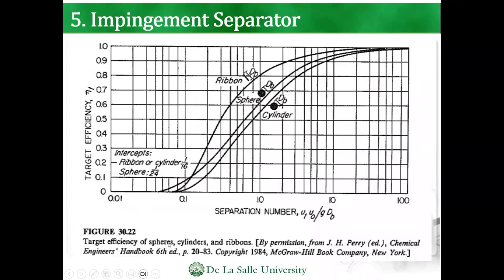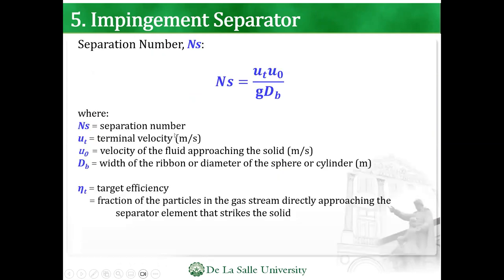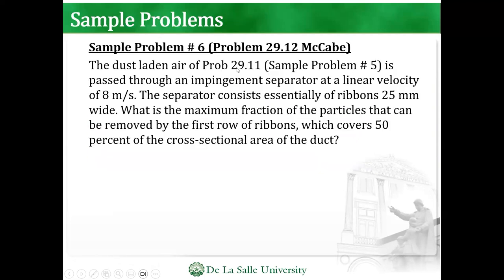The target efficiencies apply to different shapes: spheres, cylinders, and ribbons. The separation number is defined using tangential velocity, velocity of the fluid approaching the solid, and dB — which is the width of the ribbon, or diameter of the sphere, or diameter of the cylinder. You have that formula for this. Thank you.